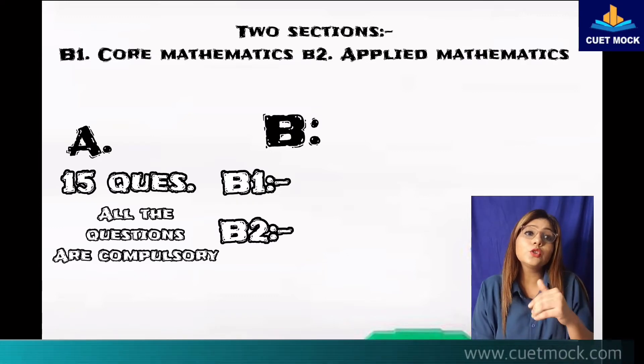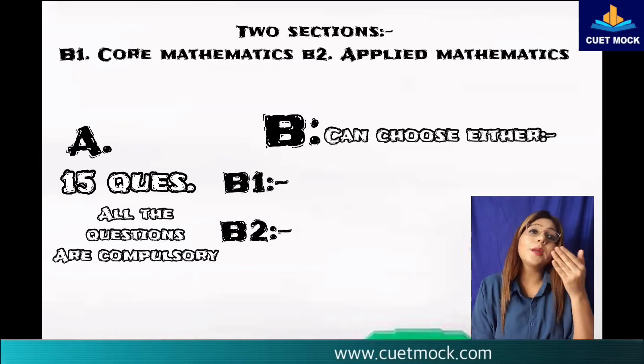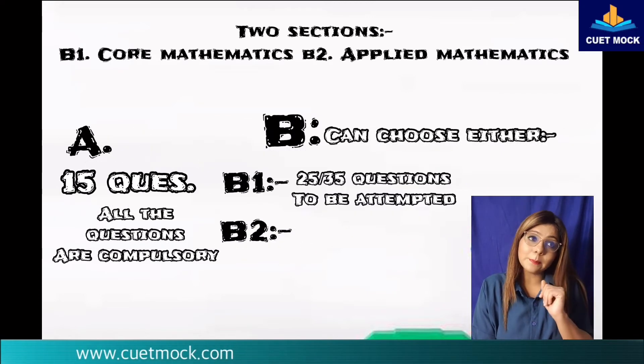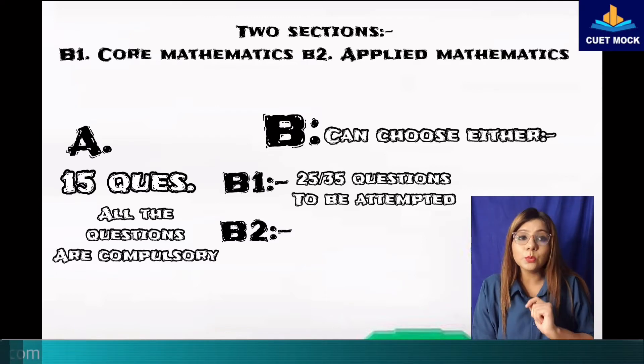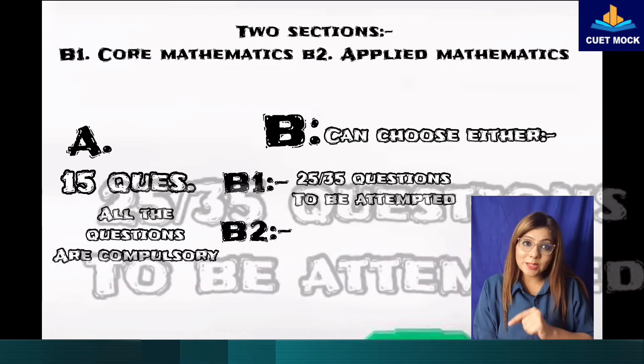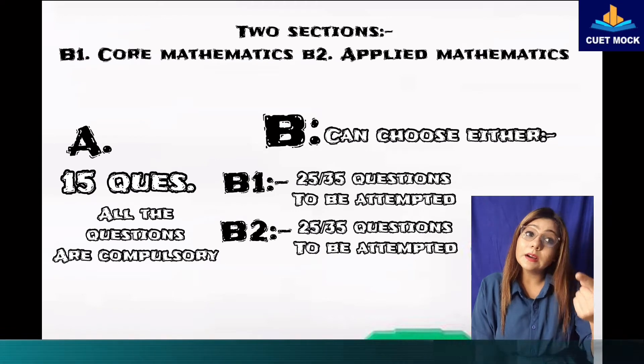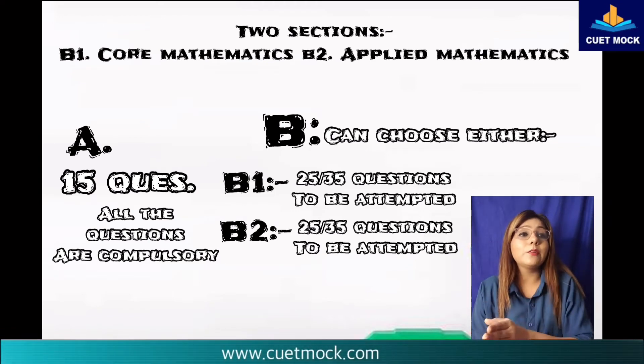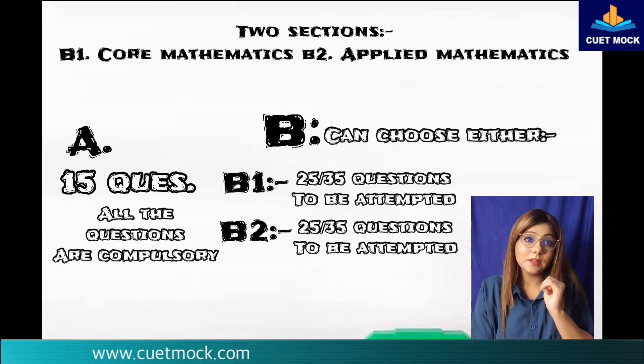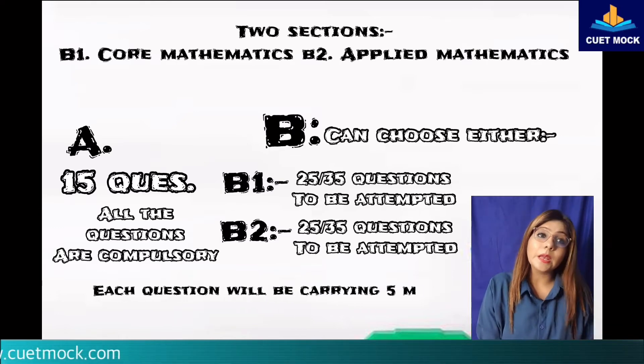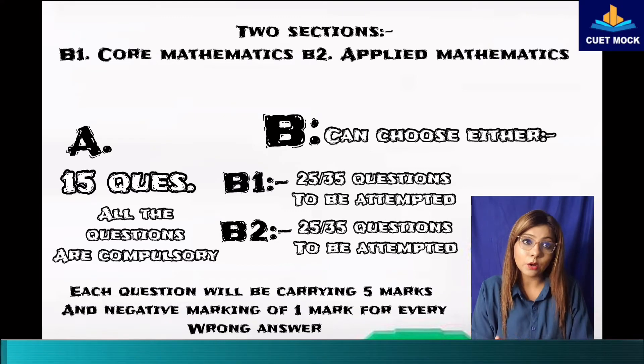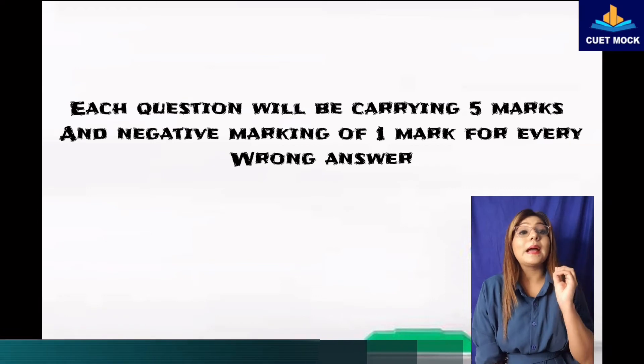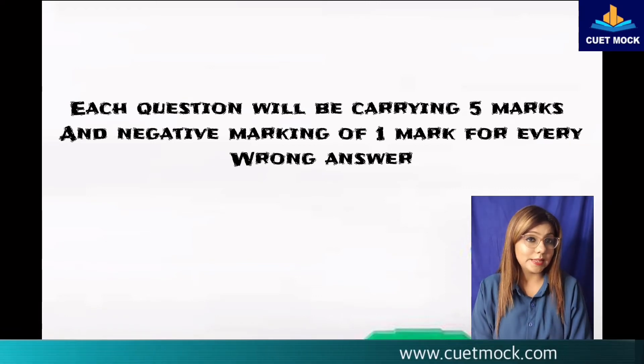The students can choose either B1 or B2. Section B1 will have 35 questions from mathematics out of which 25 questions need to be attempted. In section B2 there will be 35 questions purely from applied mathematics out of which 25 questions need to be attempted. Each question will be carrying 5 marks with negative marking of 1 mark for each wrong answer. Thus a candidate can score maximum of 200 marks in this test.